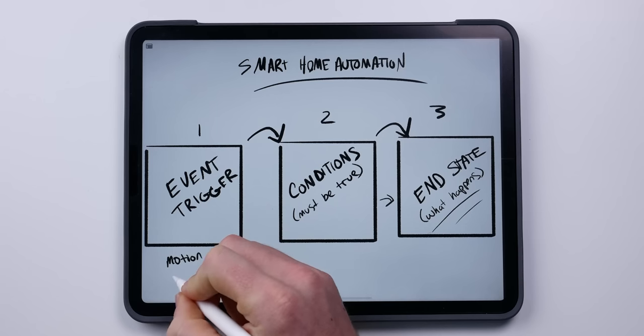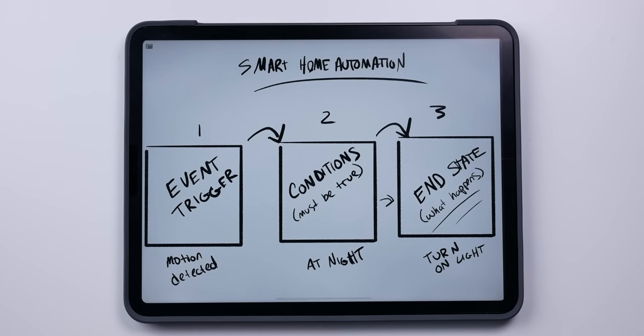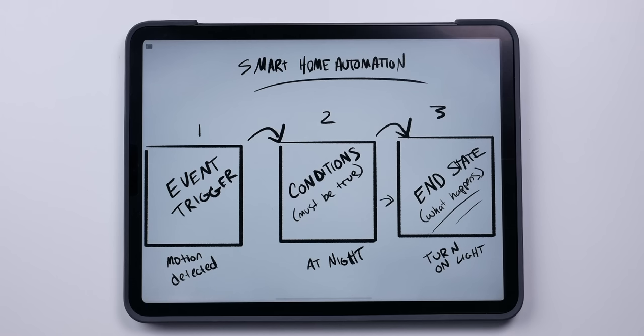Some examples: if motion is detected, turn on the light. That's a super basic automation using just a trigger and the end state — motion is the trigger, and turning on the light is the end state. Now let's add a condition. Conditions can be value conditions like the current state of other accessories, location-based like whether or not you're home, or time-based. Using our example, we'll add a time condition: if motion is detected at night, turn on the light. Now our automation will only run at night — that has to be true in order to run this complete automation.